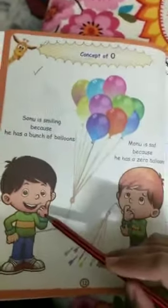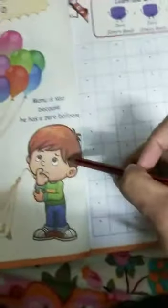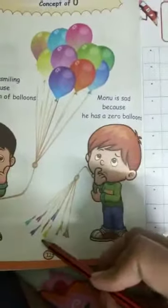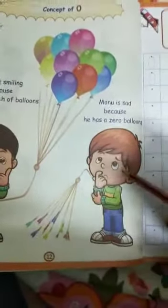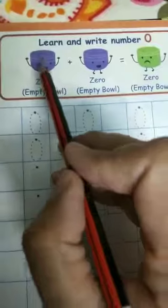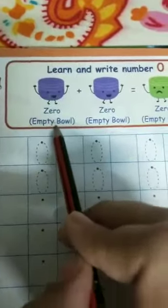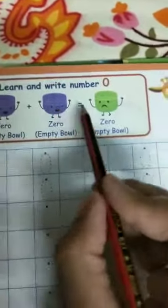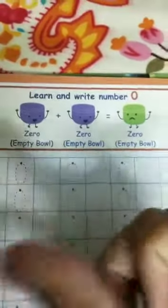See, this boy's name is Sonu and he is smiling because he has a bunch of balloons, while Mono is sad because all his balloons are burst — that means he has got zero balloons. So this is the concept of zero: zero means you have got nothing. An empty bowl means zero. Zero plus zero is equal to zero. Zero ka matlab hota hai nil — kuch bhi nahi hai aapke paas.